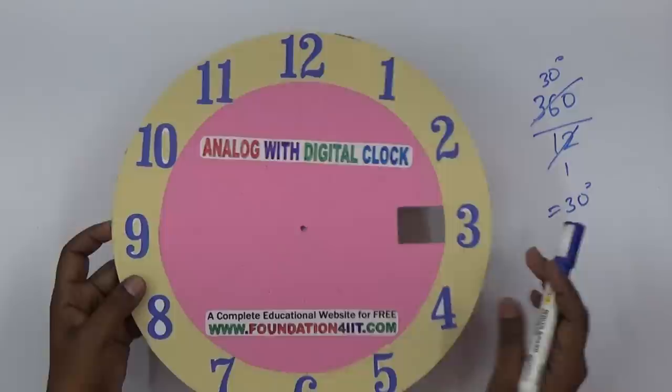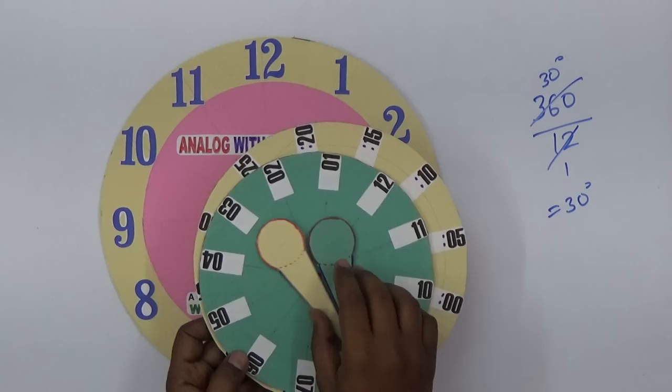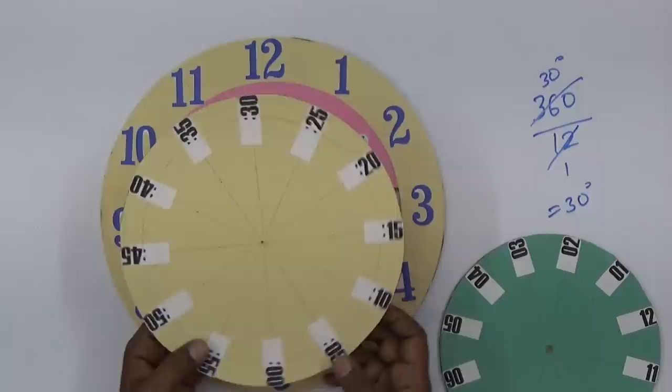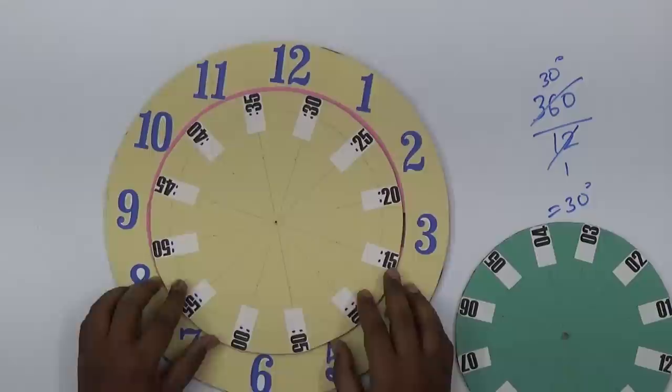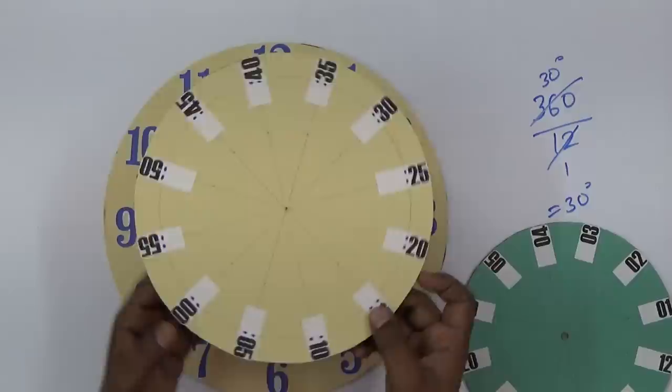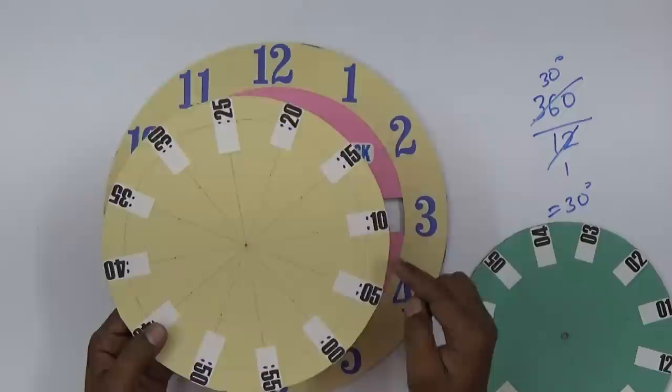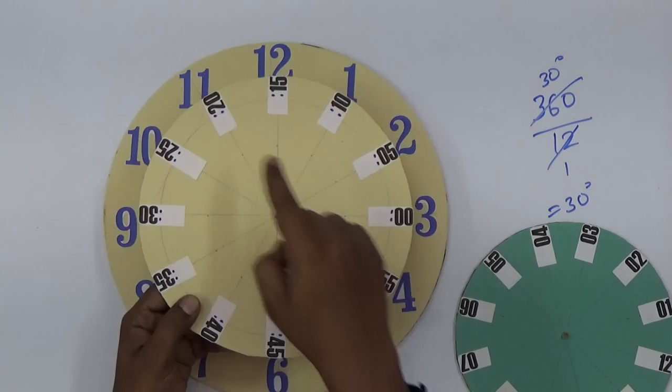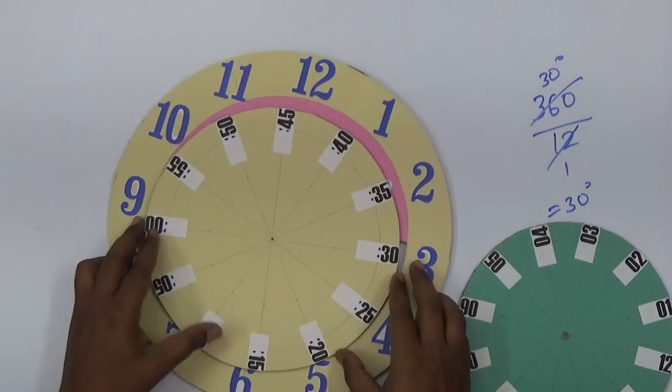We need two more circles — one for minutes and one for hours. These circular sheets should coincide inside the main sheet. For the minutes sheet, starting from zero, mark 5, 10, and so on in the anti-clockwise direction, because when you rotate clockwise the values will increase.